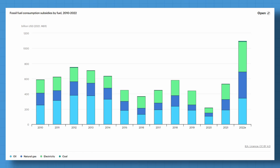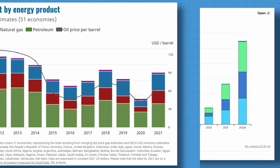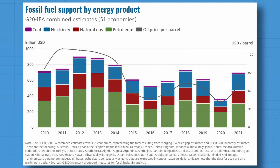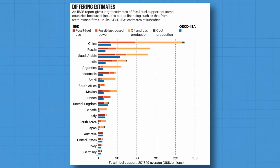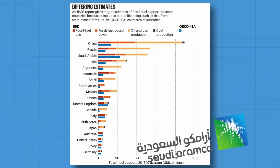So how much are we subsidising fossil fuels? Here you can see consumption subsidies calculated by the IEA with the price gap approach — it fluctuates between 250 billion a year to 1 trillion. This graph uses the OECD-IEA combination approach, adding producer subsidies too for 51 countries. In 2021, for example, 190 billion were producer subsidies and 500 billion were consumption subsidies. Other calculations show higher results, such as this one by IISD, where certain countries have higher subsidies as it takes into account subsidies for state-owned firms.